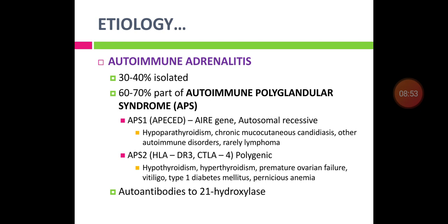APS-2 associated diseases include hypothyroidism, hyperthyroidism, premature ovarian failure, vitiligo, type 1 diabetes mellitus, and pernicious anemia. Autoantibodies to 21-hydroxylase can be demonstrated in autoimmune adrenitis.